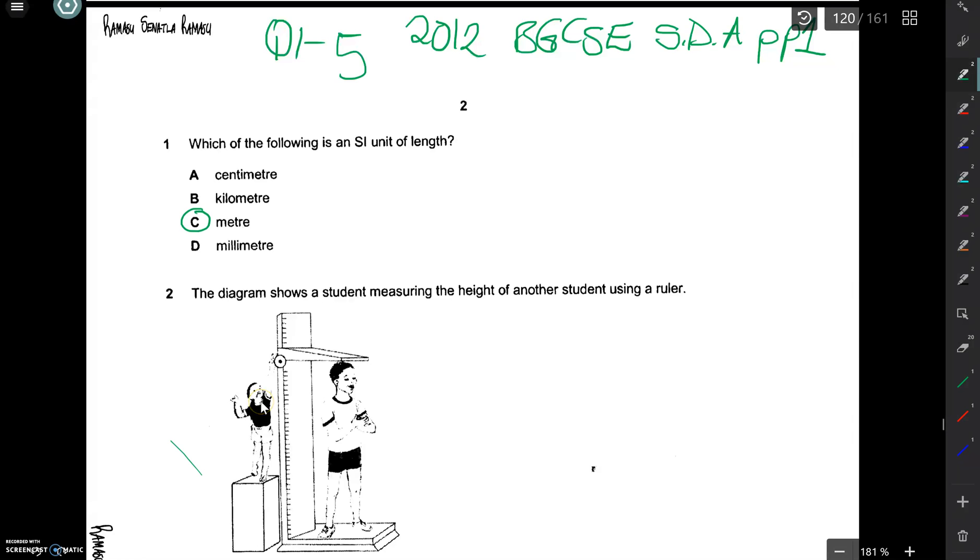To convert meters to centimeters, you multiply the meters by 100. Centi here, the prefix centi comes from century, which means 100 years.